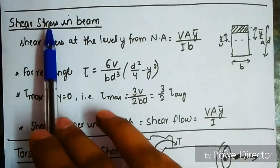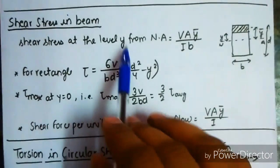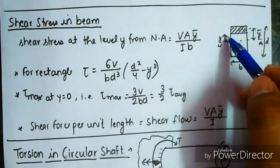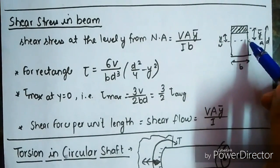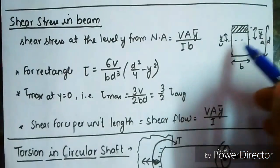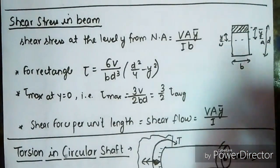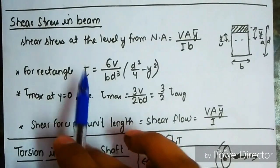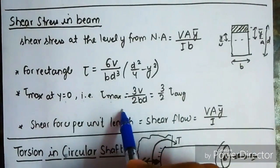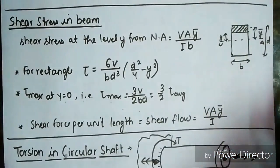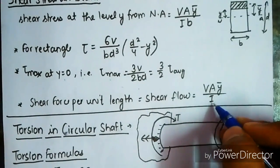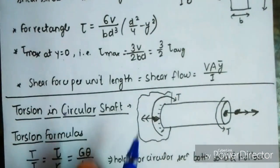Shear stress at a level y from the neutral axis equals VAy-bar upon Ib, where V is the shear force, A is the area of section above y, y-bar is the distance from the neutral axis to the centroid of that section, I is the moment of inertia about the neutral axis, and b is the width. For rectangular sections: tau equals 6V upon bd³ times (d²/4 minus y²); tau-max at y equals 0 is 3V upon 2bd, which equals 1.5 times tau-average. Shear flow equals VA-y-bar upon I.